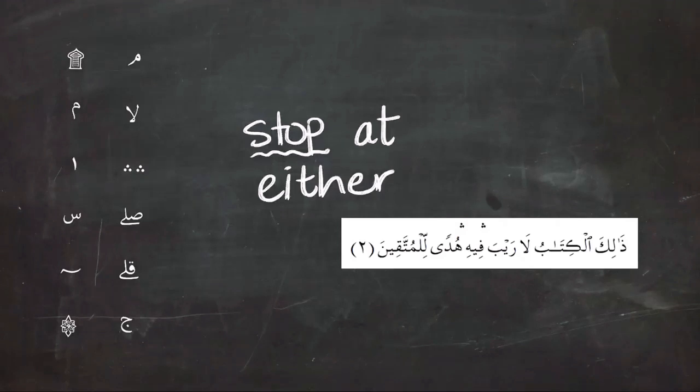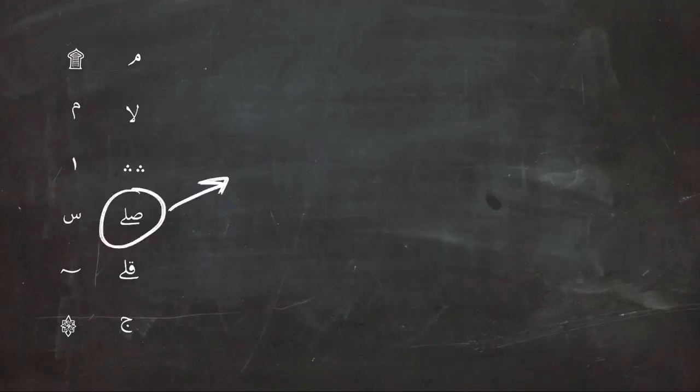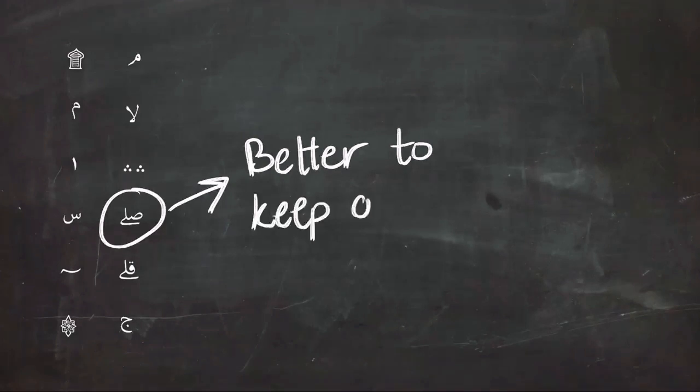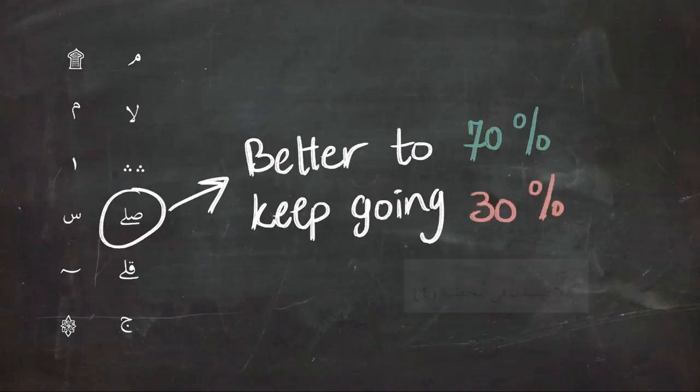Next is the symbol that looks like the word sil, and it means you better keep going. We could basically compare it to 70 percent go, 30 percent don't go, and it means that it is better to keep reading, like in the example.